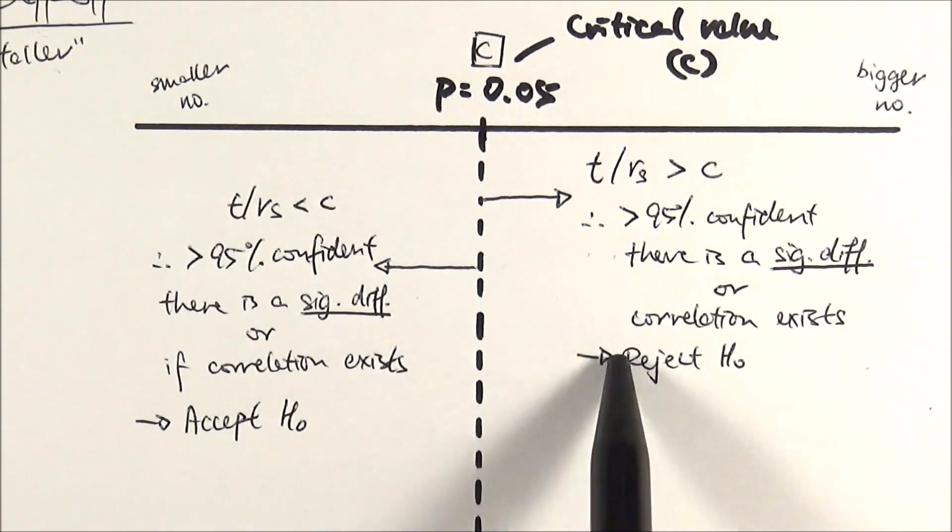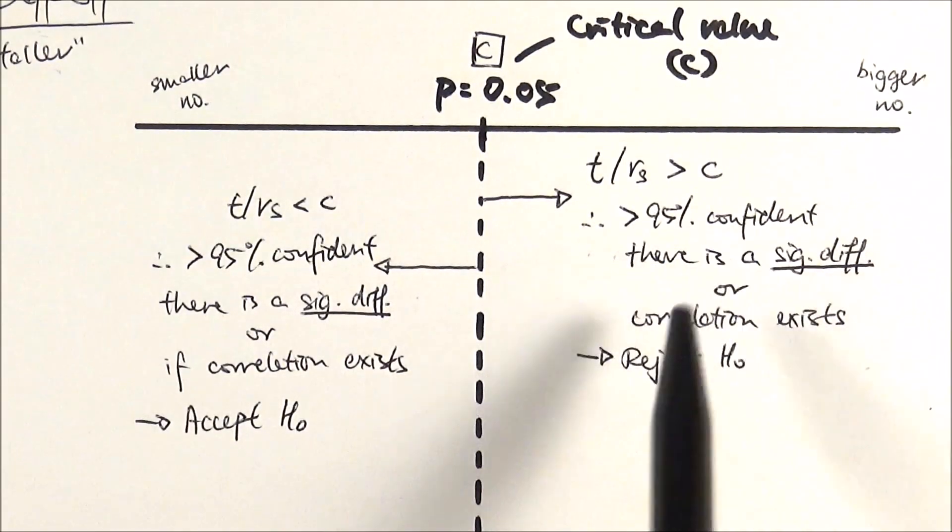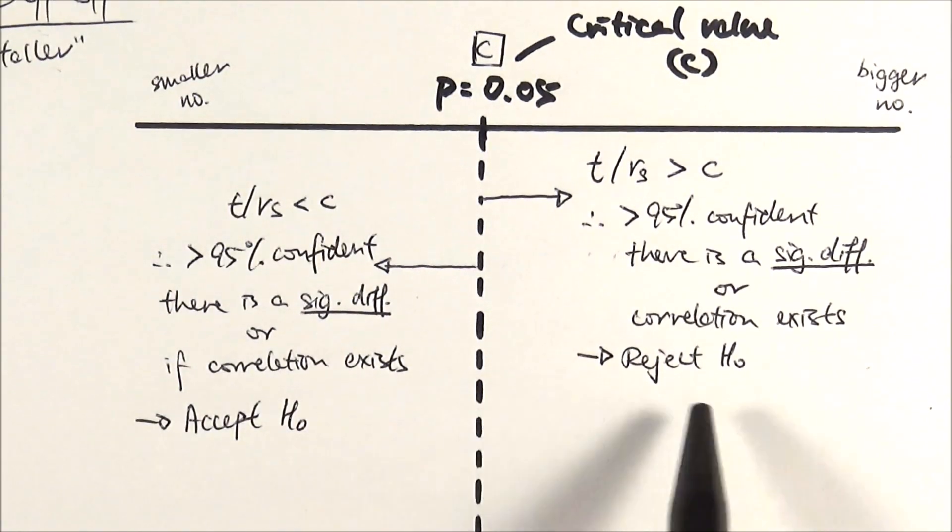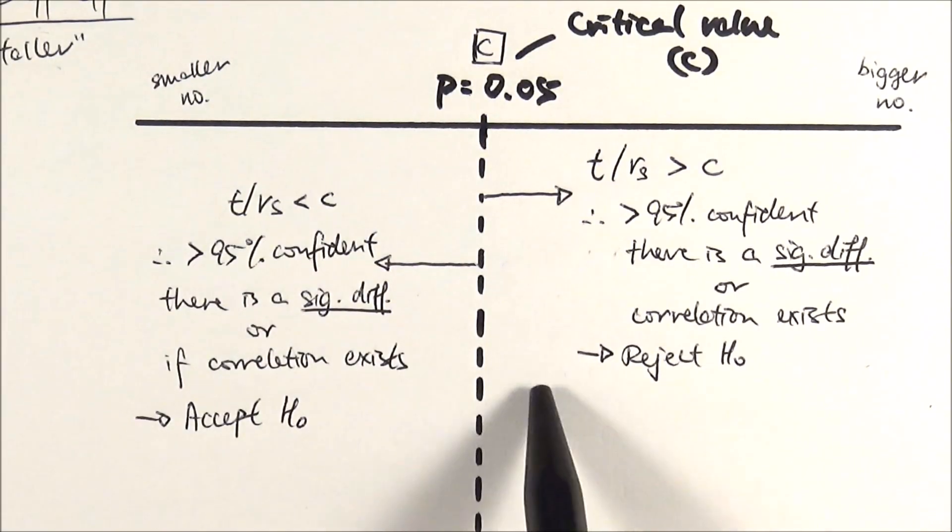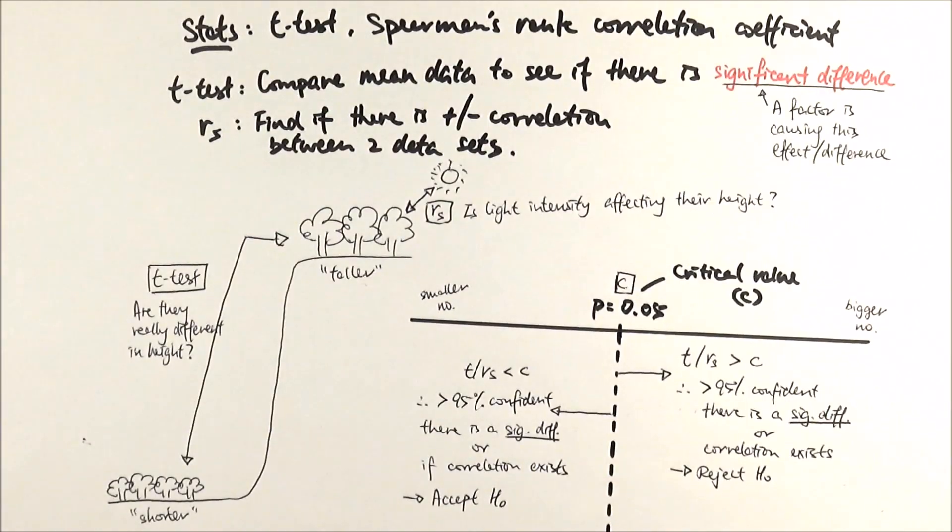That's probably the more complicated bit that you need to know about stats, but once you remember this timeline-ish thing here, you should be able to explain it. This is how you want to lay it out. This is one mark in exams, and that's another mark. Sometimes the third mark, they would want you to actually restate the null hypothesis and say what you're going to do, or state the actual concluding statement. For example, 'sunlight light intensity is affecting tree height' or 'two groups of data are significantly different.' There you have it, this is stats in AS biology.